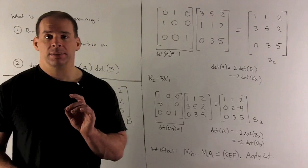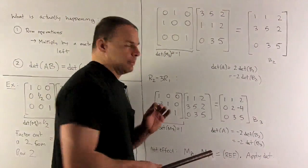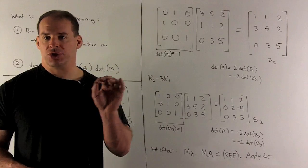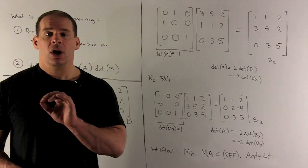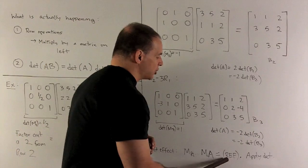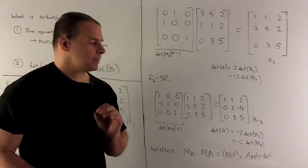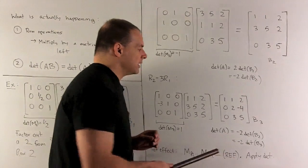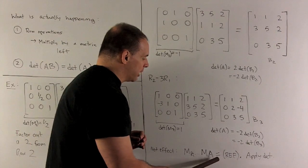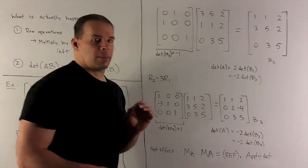The net effect: we take matrix A and keep multiplying it on the left by these row operation matrices, which pile up on the left until we get to row echelon form on the other side. Applying the determinant rule, the determinant of the row echelon form in this case is 1. So if you want the determinant of A, you take 1 and divide by the determinant of each row operation matrix used.